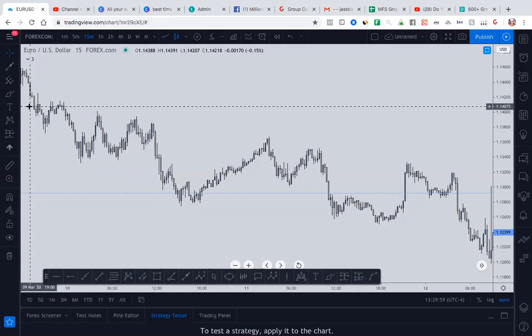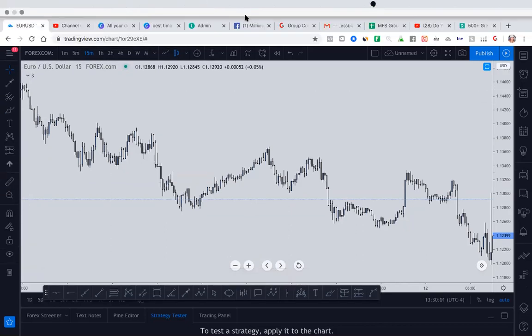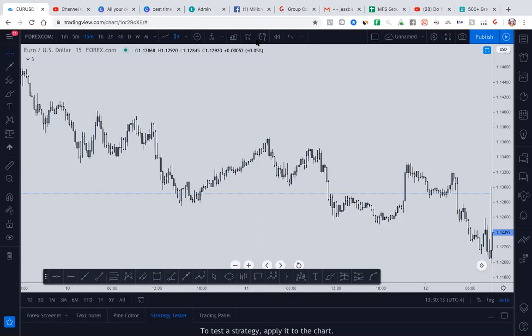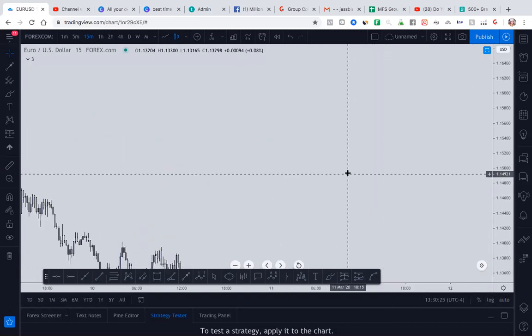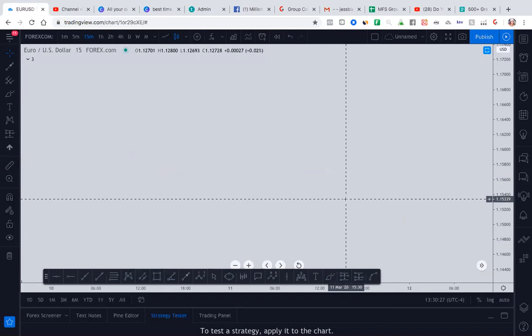So let me explain to you what confluence is. Confluence is basically confirmations for you to say, okay, I feel comfortable getting into this trade. And what you want to do is you want to create your own trading plan utilizing confluence. So, I keep talking about confirmations. What are these confirmations? Let's talk.